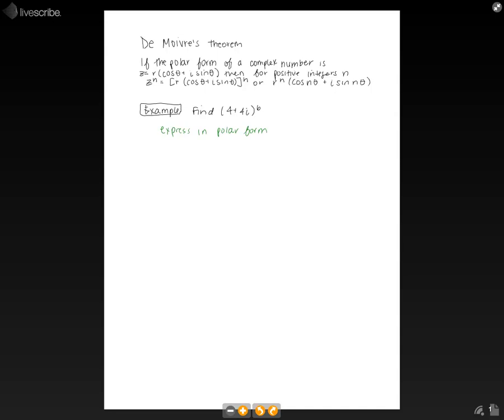To do this, use r equals square root of a squared plus b squared, which is 4 squared plus 4 squared, which is the square root of 16 plus 16, which is the square root of 32, which simplifies to 4 square root of 2.